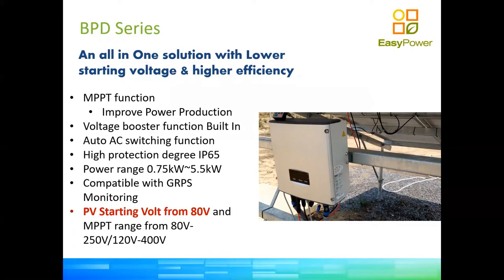The BPD is ideal for most booster pumps, ball pumps, and sweeper pumps, and can even work commercially since a 5.5 kilowatt borehole pump is quite a decent unit, producing several cubic meters per day for cattle or similar applications. It has a very low starting voltage of only 80 volts on the PV side because it has a built-in PV booster.